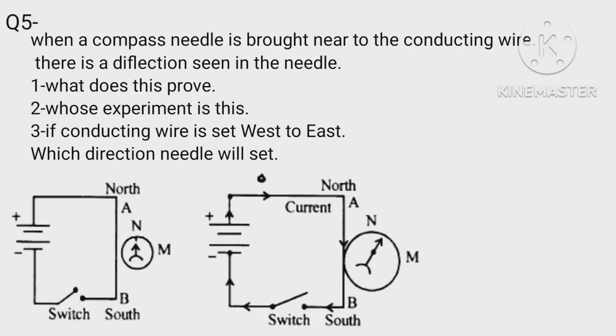When a compass needle is brought near to the conducting wire there is a deflection seen in the needle. One: what does this prove? Two: whose experiment is this? Three: if conducting wire is set west to east which direction needle will set? Answer: one, existence of magnetic field. Two, named as Oersted's experiment. Three, needle will set west to east.